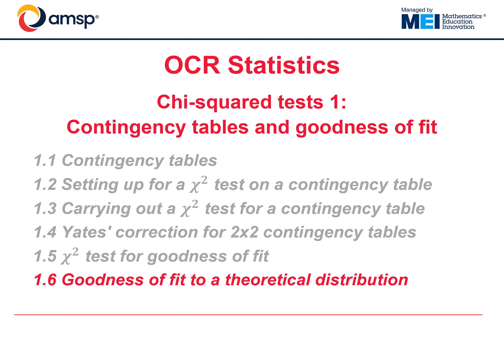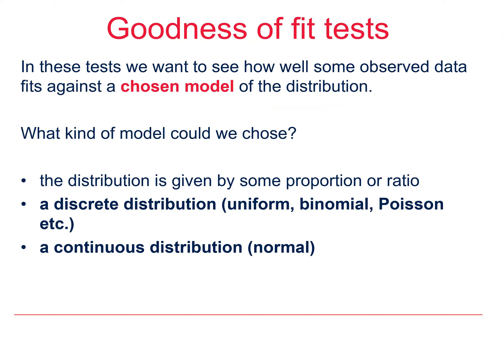Hello, welcome to this OCR Further Maths Statistics video, the sixth and final one in the series looking at chi-squared tests. In the previous video, we looked at testing data against a ratio. Now we're going to test data to see how well it fits a standard probability model.